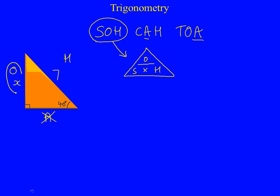Well, we're looking for O, because that's where x is. So we're looking for O. So when you cover up O, you can see that O is S times H. So O equals S times H.